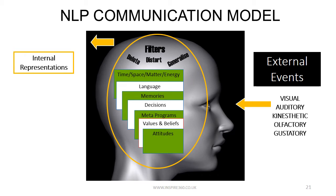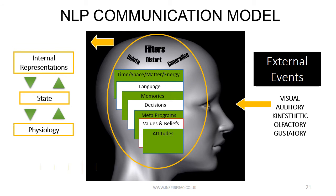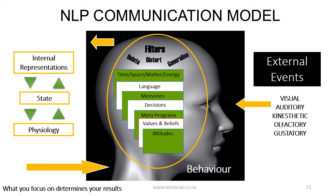Our internal representation is connected to our state, which is the sum of how we feel — be that happy, sad, excited, anxious, etc. Our state is connected to our physiology: how your body is positioned, how you are breathing, what's your heart rate and other aspects of our physiology. These three things together — internal representation, state and physiology — are all connected and together they determine what your behaviour is. So if you want to change your behaviour, you need to change either or all of your internal representation, your state and your physiology.